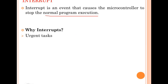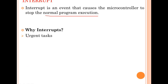Why interrupts? For doing urgent tasks that should be done immediately. For example, if you are traveling in a car and suddenly your car meets with an accident, the accelerometer or MEMS sensor present in the car should detect the accident and the airbag should be released immediately because human life is more important than other things. Here releasing the airbag is the urgent task.